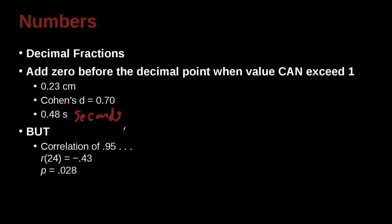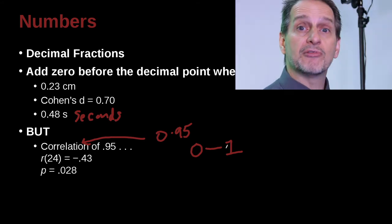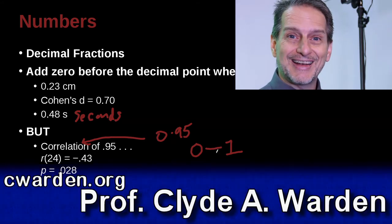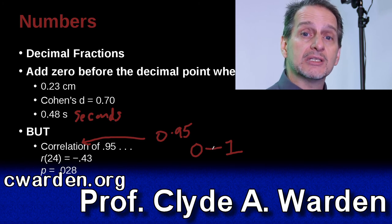But you would not do that for something like a correlation of 0.95. You should not write 0.95 for correlation. Why? Because correlation has a range of 0 to 1. Correlation cannot be bigger than 1. And if it cannot be bigger than, then you cannot add the 0.